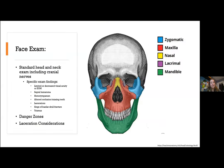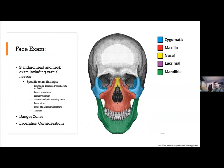For facial trauma, the standard head and neck exam includes airway assessment, appearance, lacerations, deformities, swelling, bruising, and bleeding. Check ears, nose, and mouth depending on injury type, palpate the scalp and neck, and perform a cranial nerve exam. Spencer breaks the face into thirds: upper third — frontal sinus; lower third — mandible; middle third — most complex, including nasal bones, mid-face fractures such as Lefort, zygomaticomaxillary complex (ZMC), and orbital floors.